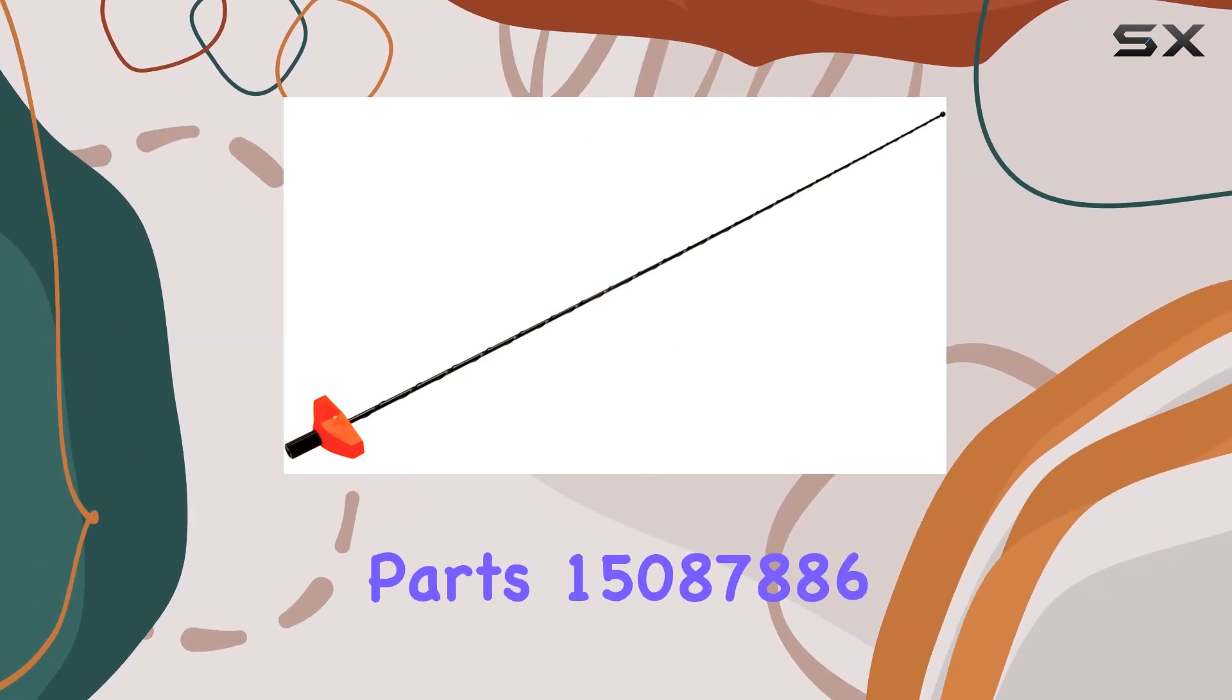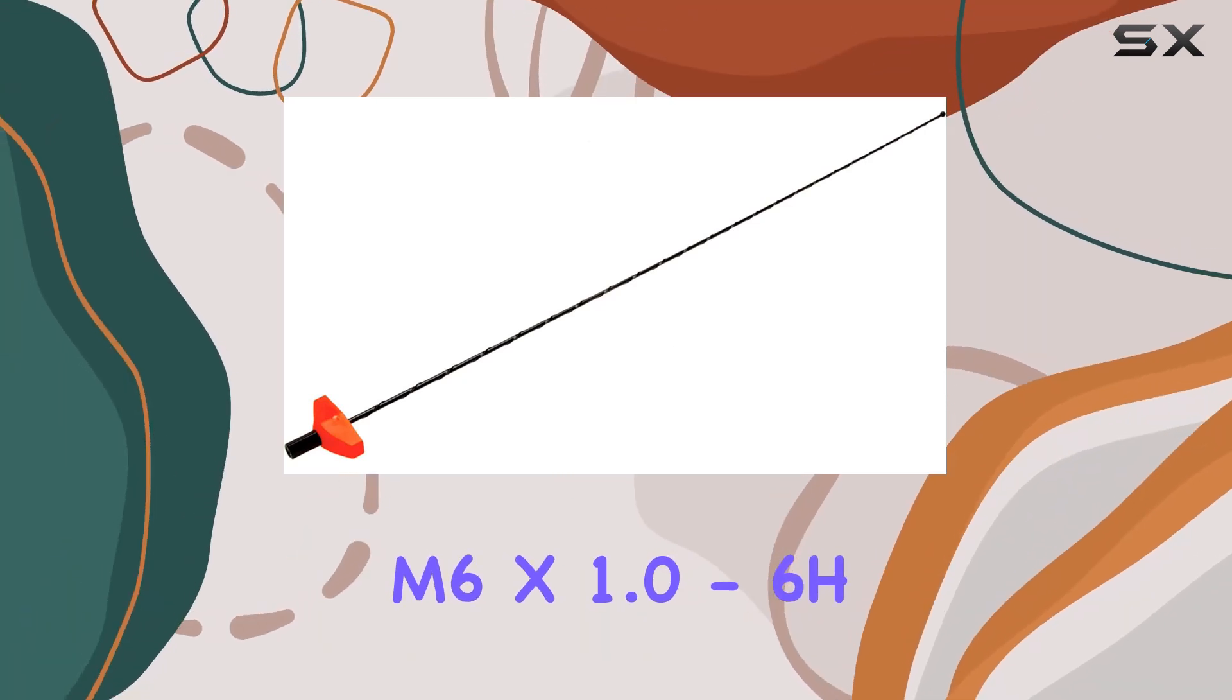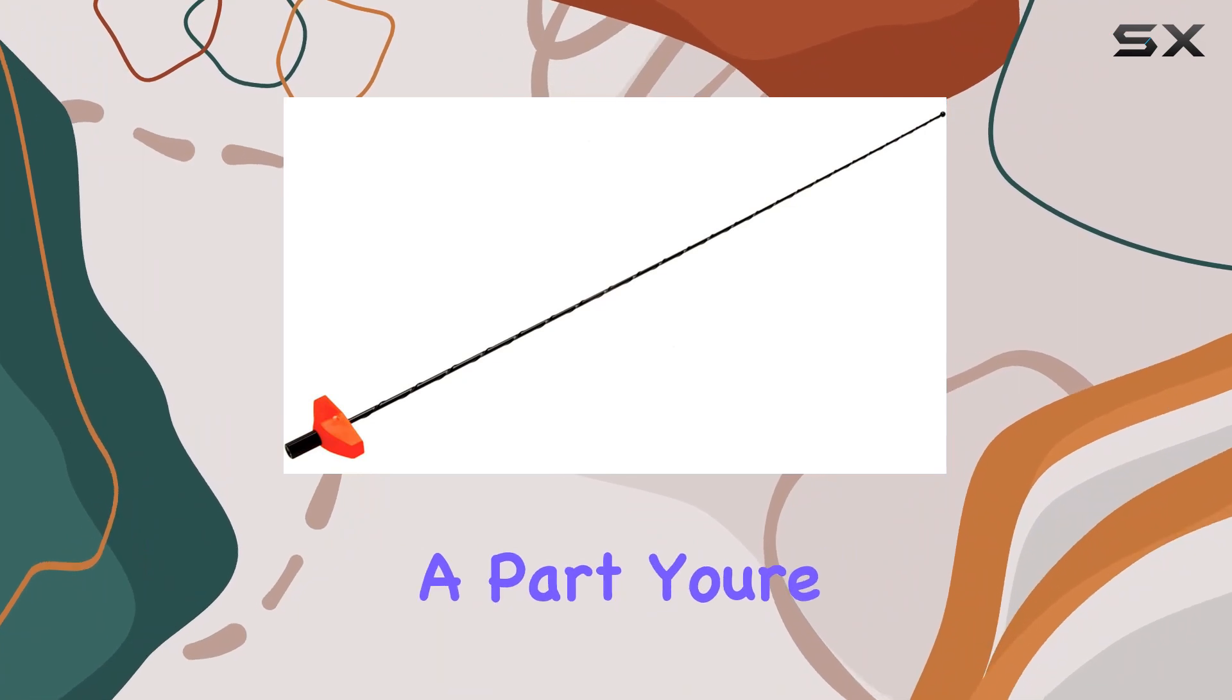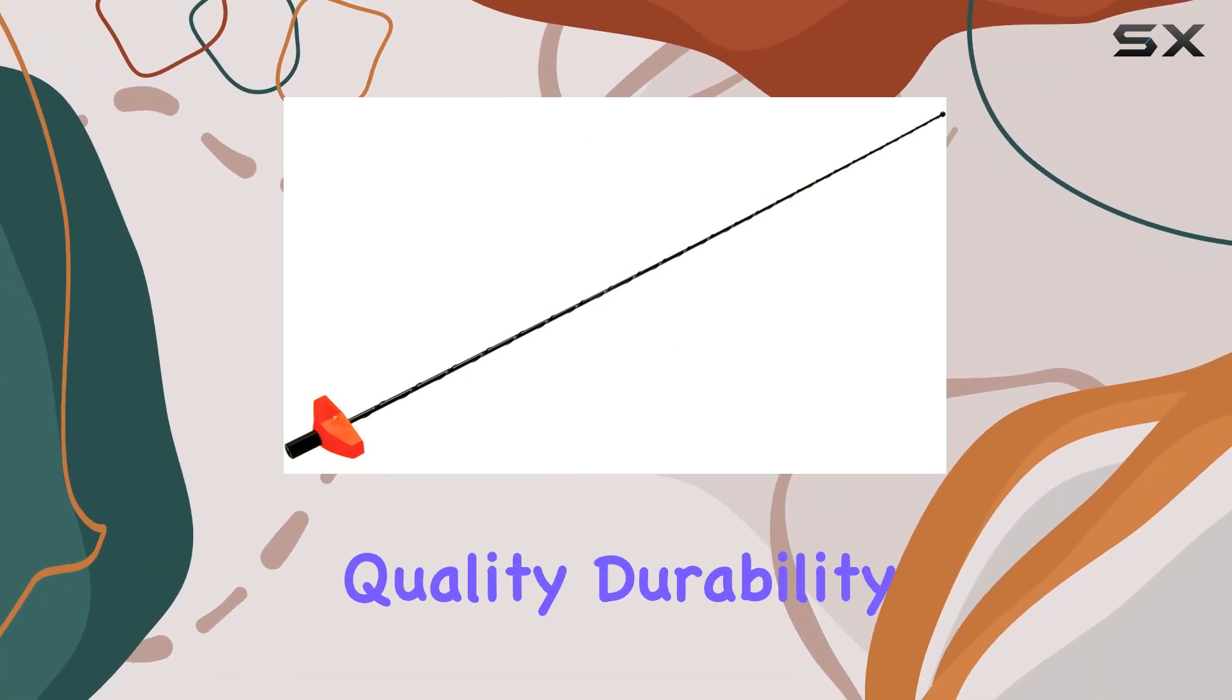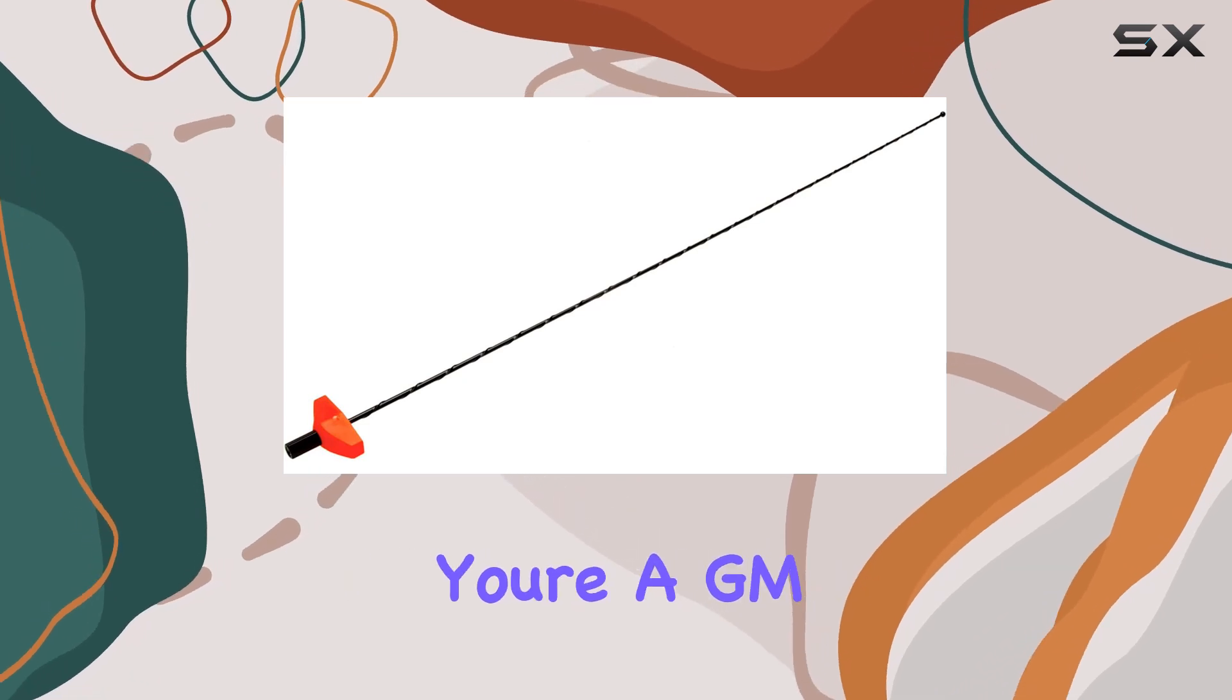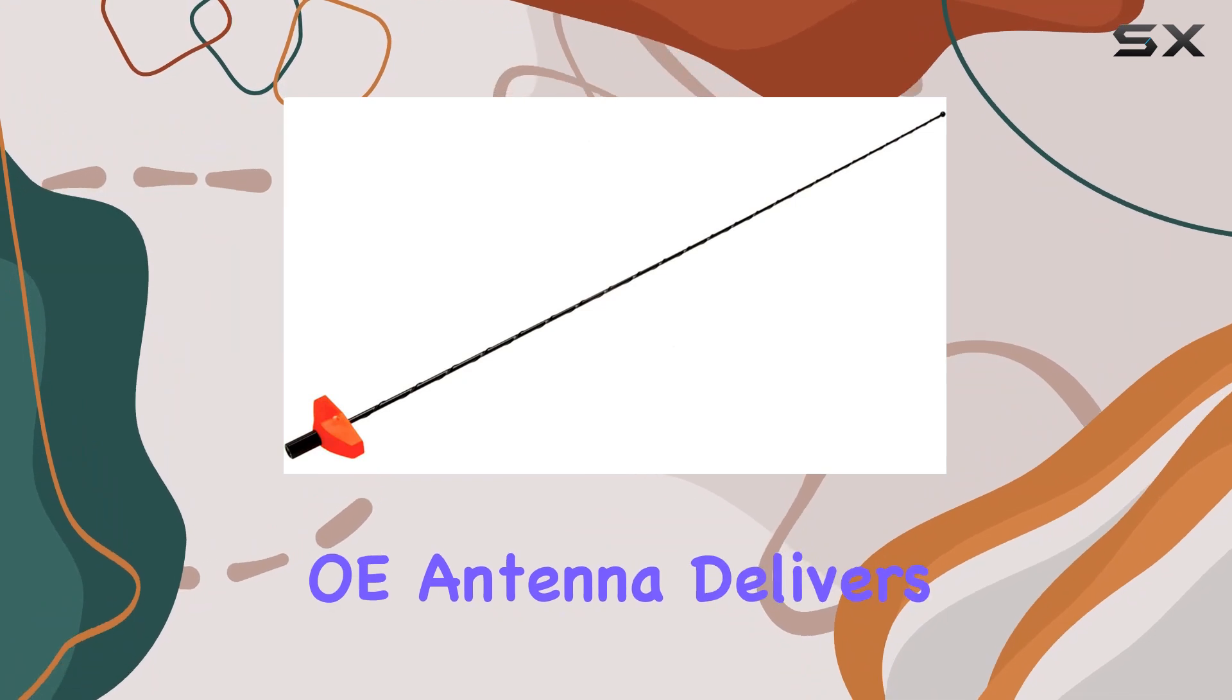When you choose the GM Genuine Parts 15087886M6X1.0-6H Thread Radio Antenna, you're not just buying a part, you're investing in superior signal quality, durability, and peace of mind. So, whether you're a GM enthusiast or simply in need of a reliable antenna, this OE antenna delivers on all fronts.